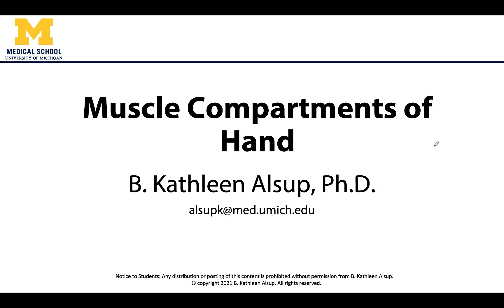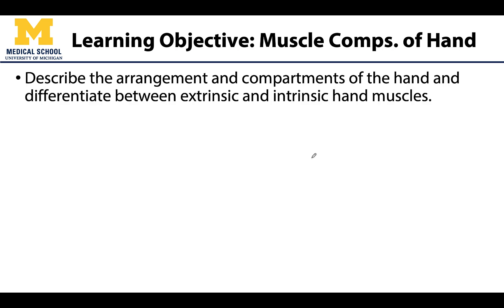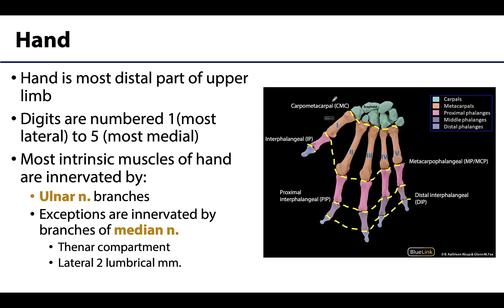Hello anatomy friends, this is Dr. Alsup and in this video we will be discussing the muscle compartments of the hand. There are going to be five muscle compartments in the hand, and this area is unique in the fact that there is a fairly high frequency of both extrinsic as well as intrinsic hand muscles. The hand is the most distal portion of the upper limb, but it's also the most dexterous — you can do a lot of small but quite complex movements in this area.